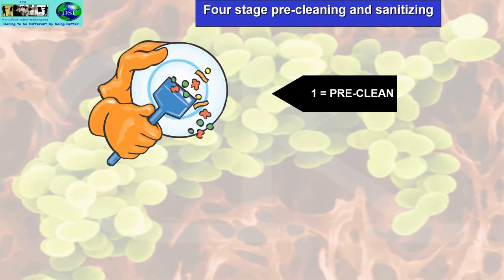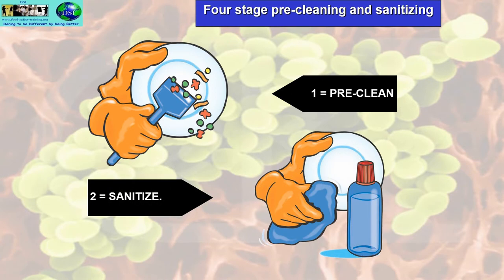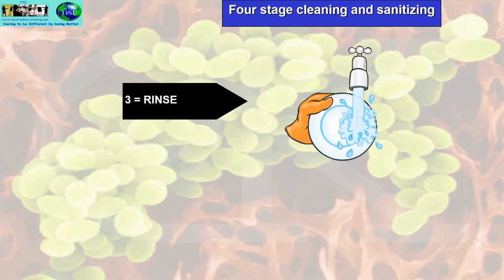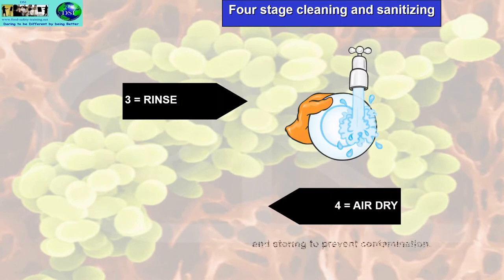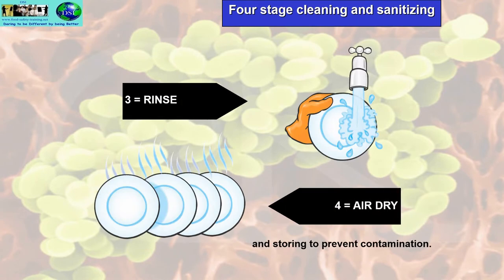There's also a four-stage pre-cleaning and sanitising process. The pre-clean is normal — removing initial food debris from the plate, preparation board, or whatever it is. Then we sanitise with a liquid sanitiser, which as you recall cleans and disinfects. We then do a final rinse to remove any residue, followed by air drying and storing to prevent contamination.